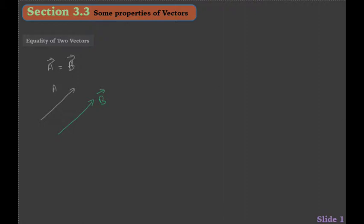Vector A can equal vector B if vector A and B have the same magnitude and direction. What I mean by that is if they have the same number — for example, if vector A and vector B have the same velocity, so if they both travel at 65 kilometers per hour and they are both going in the same direction, pointing towards the same point, then vector A is equal to vector B.